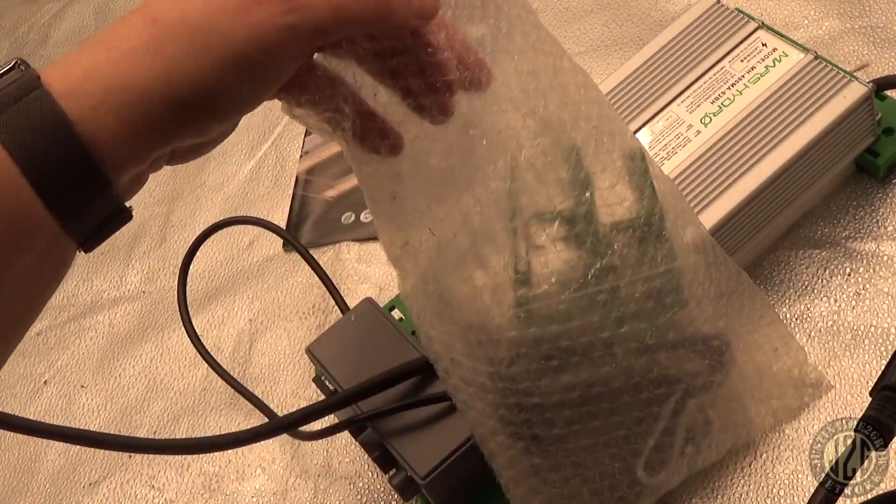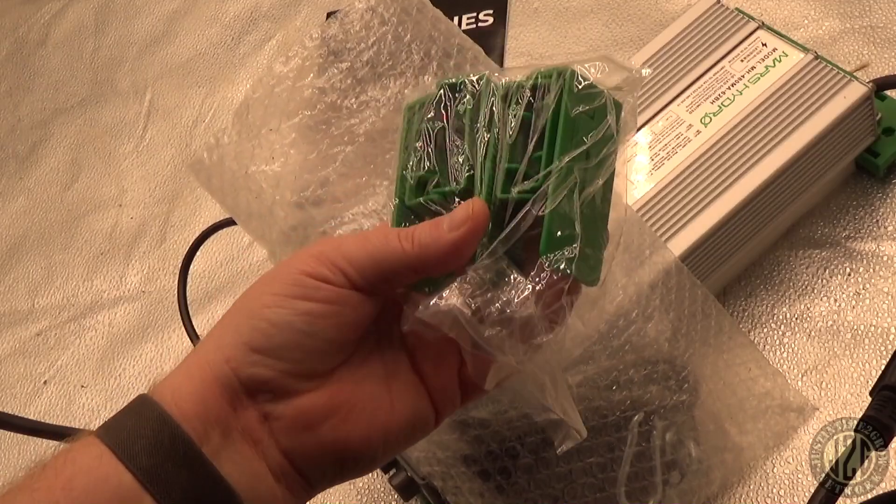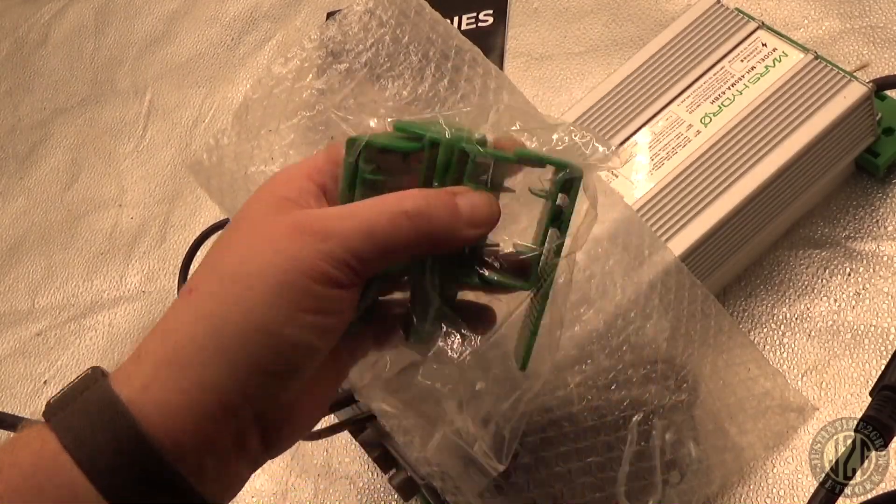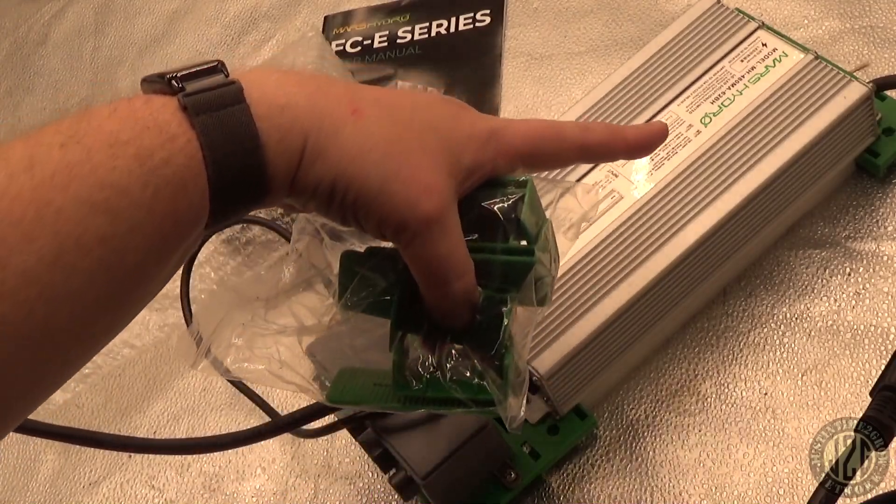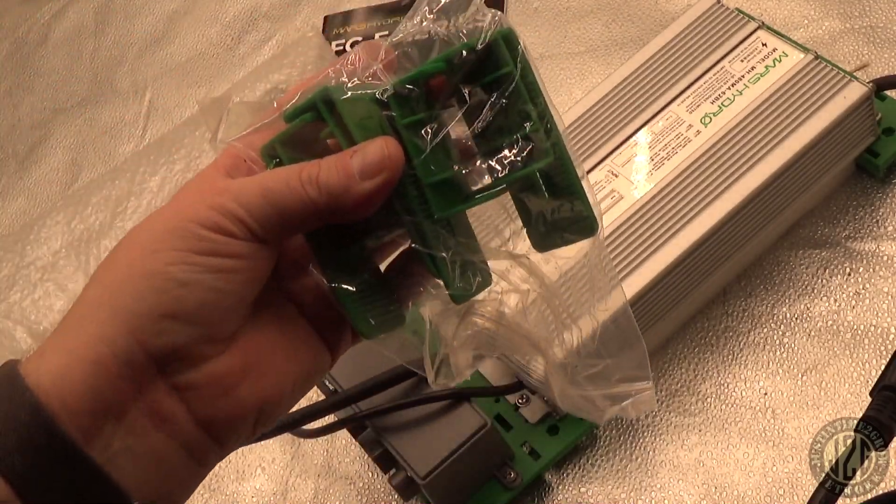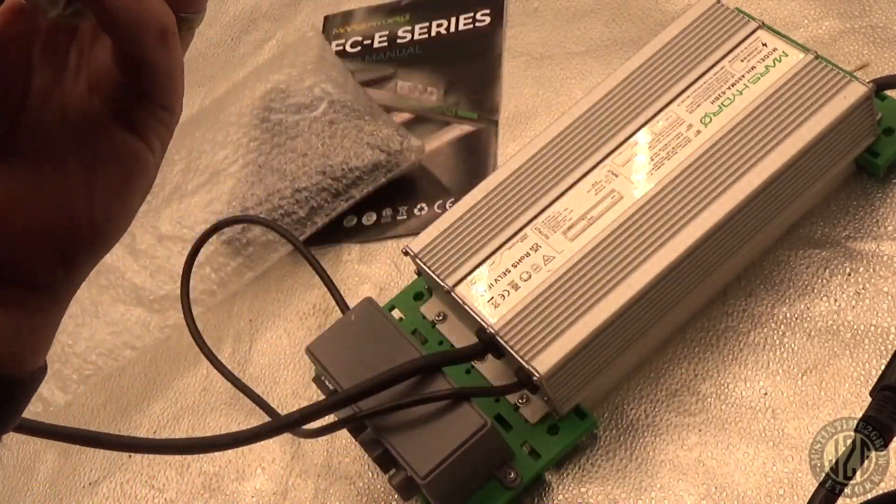Of course we've got the little hanging kit that we were already using to hang the light. Then you've got these little brackets here that actually go into this bottom bracket on the driver. So if you want to mount it to the light itself, this is how you would do it with these brackets. It's pretty easy to do.